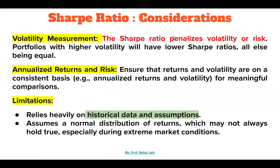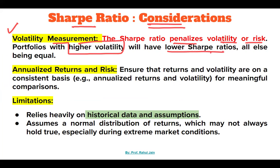Regarding considerations for the Sharpe Ratio: the first is volatility measurement. The Sharpe Ratio penalizes volatility or risk — portfolios with higher volatility will give a lower Sharpe Ratio, all else being equal. Also ensure that returns and volatility are on a consistent basis, for example annualized return and volatility, for meaningful comparisons.